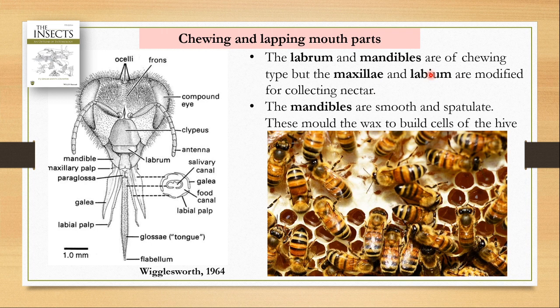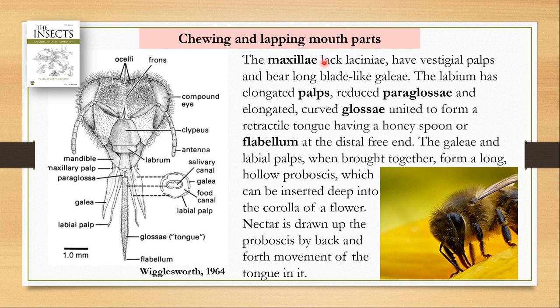So bees have a labrum and mandibles which are chewing type, and the maxillae and labium are modified for collecting nectar. The mandibles, specific to bees, are smooth and spatulate — they help in molding the wax to build the cells of the hive. The labium and maxillae form the lapping mouthparts. In the maxillae, the laciniae are absent and only vestigial maxillary palps remain. What is elongated is the long blade-like galea.